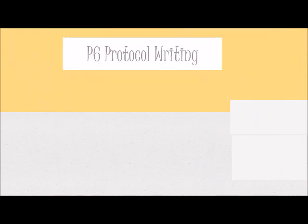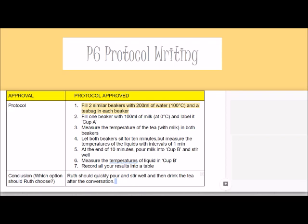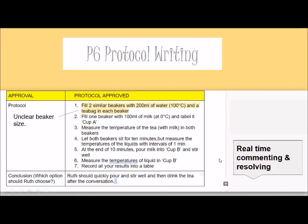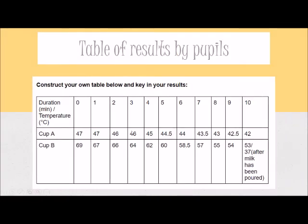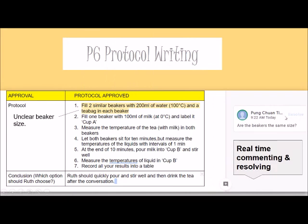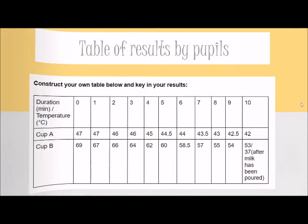Moving on to what we have improved: for P6 protocol writing, we now use Google Documents. We provide a template without the protocol of course, and students key in the protocol based on group discussion. We can then provide real-time comments and questions. It's a fast and free way of commenting and resolving issues — students can click to resolve a comment once they've addressed it. We also included a row for approval: once the protocol is approved, we type it there and they know they can move on to the next step.